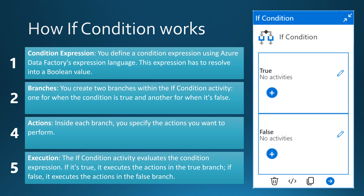When the If Condition is executed in the pipeline, it first evaluates the expression value. If it's true, it runs the actions in the true branch. If it's false, it executes the actions in the false branch. Now let's check out in more detail how this If Condition expression evaluation works.